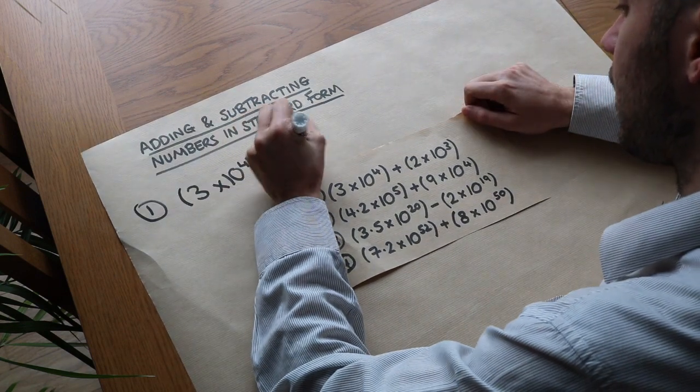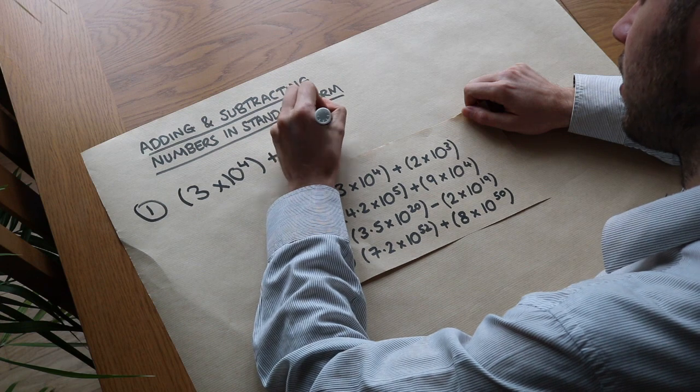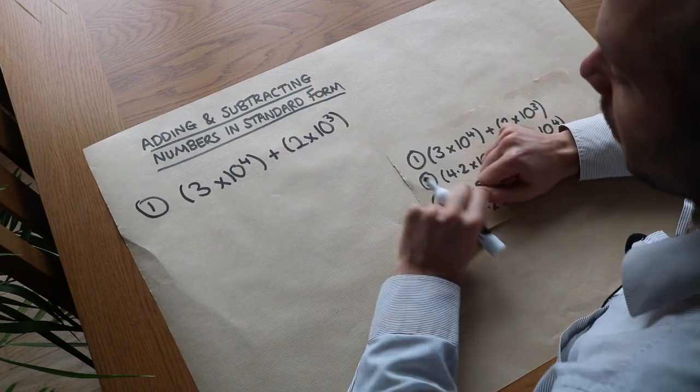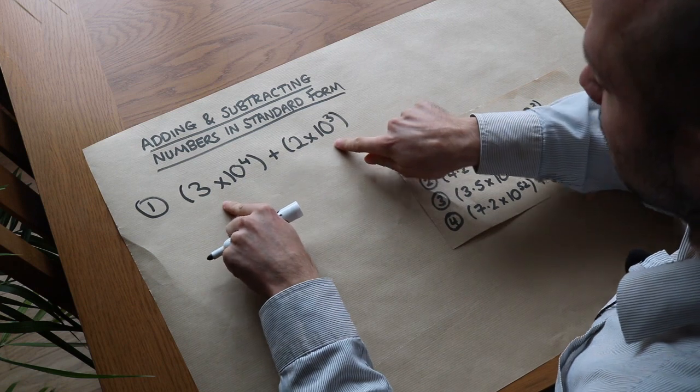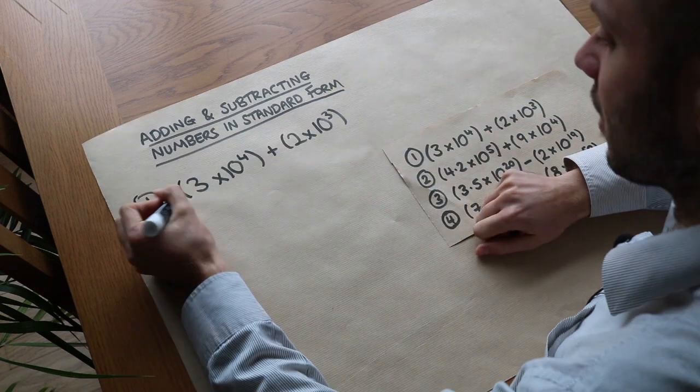Now one way you could do it is you could first convert each of the numbers to normal numbers, add the normal numbers together, and then convert it back to standard form.